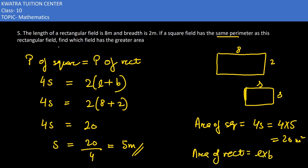And area of rectangle which is length into breadth. Length ki value 8 and breadth is 2. So it will result into 16 meter square. So that's it.